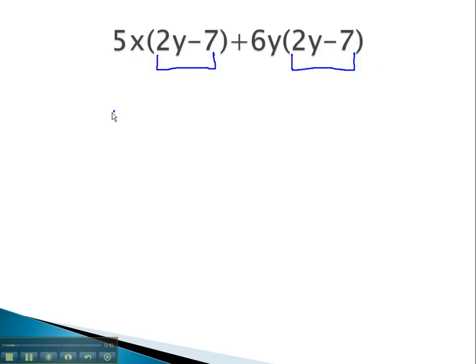We pull the 2y minus 7 out front in parentheses, just like it was, and then in the next set of parentheses, we put what is left when the 2y minus 7 is factored out.